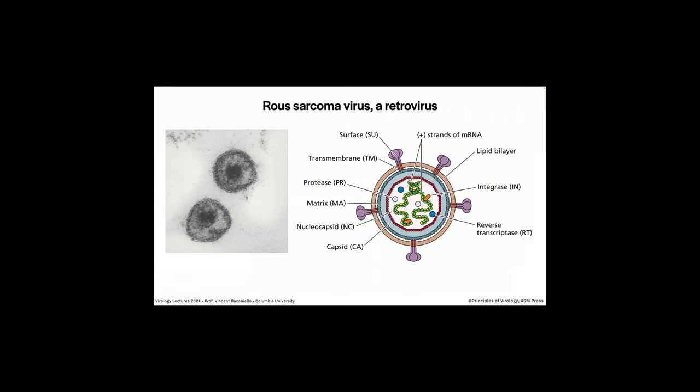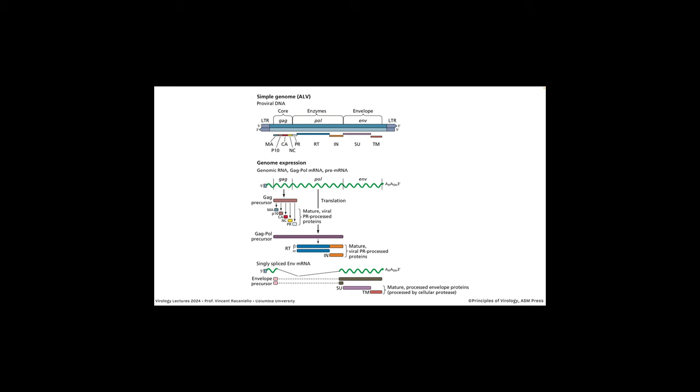Rous sarcoma virus, one of those first RNA tumor viruses discovered, is an enveloped virus with glycoproteins in the envelope — called SU and TM, the surface and transmembrane parts. There is an icosahedral capsid within it containing the viral plus-stranded RNA. There are two copies of the RNA, and they're coated with a protein called nucleocapsid protein. It's very unusual for a plus-stranded RNA virus to have protein coating the genome. In this virus particle, you can see there is reverse transcriptase, integrase, a protease, and some other things.